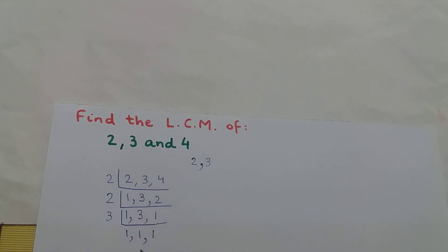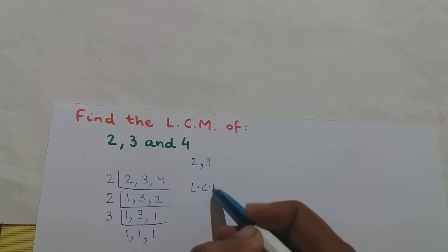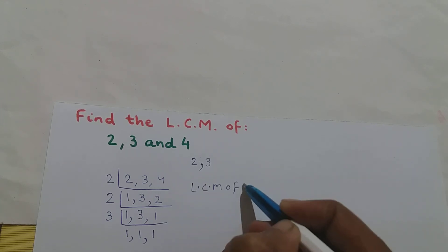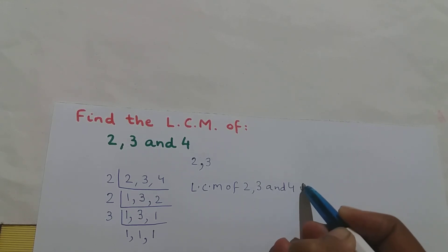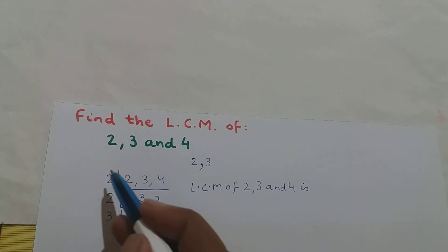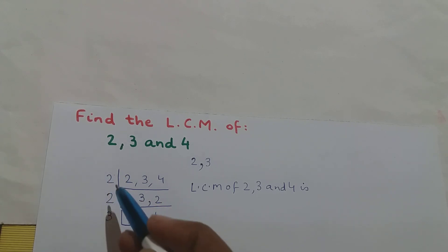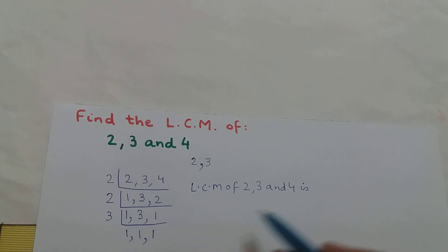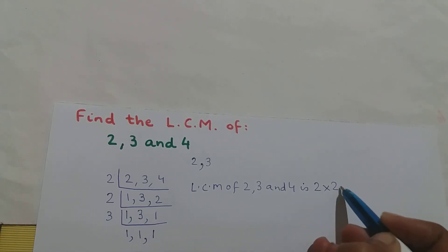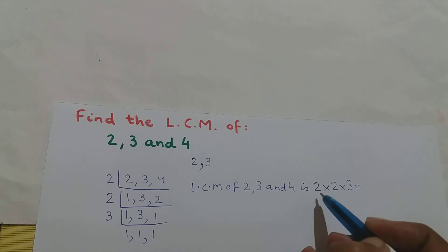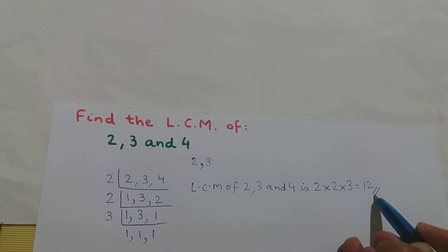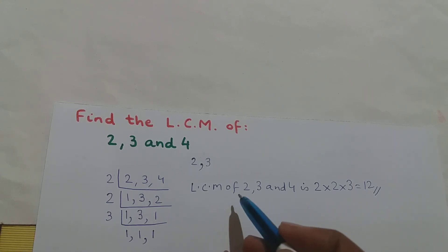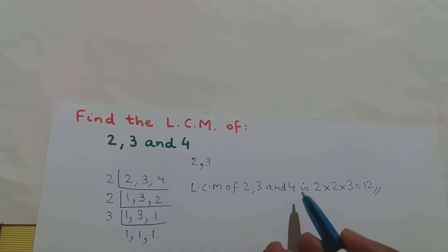The task is complete. The LCM of 2, 3, and 4 is found by multiplying the numbers: 2 × 2 × 3. 2 × 2 is 4, and 4 × 3 is 12. So the LCM of 2, 3, and 4 is 12.